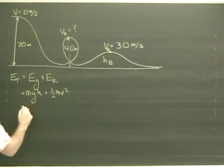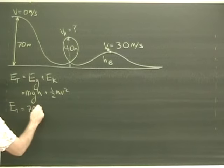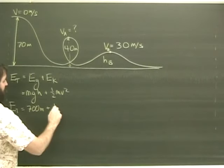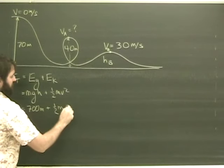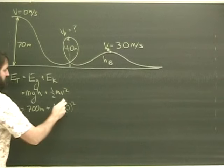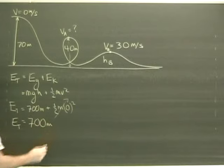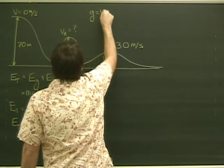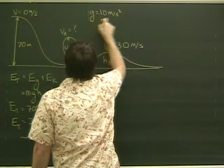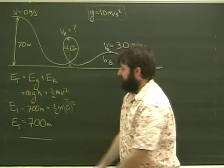If I put some givens in here, I can find that the total energy is 700m plus a half plus zero. So that goes away. Now this, of course, is assuming that g I'm going to use as 10 meters per second squared, just to make things a little bit easier. So the total energy of this roller coaster is 700m.